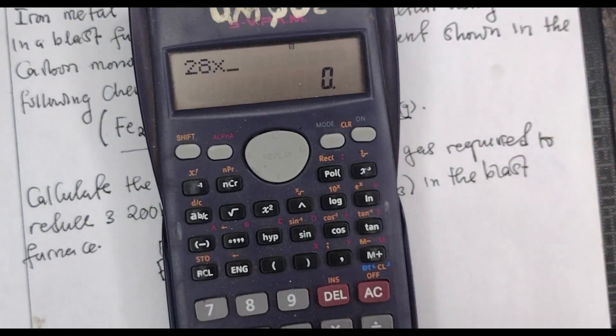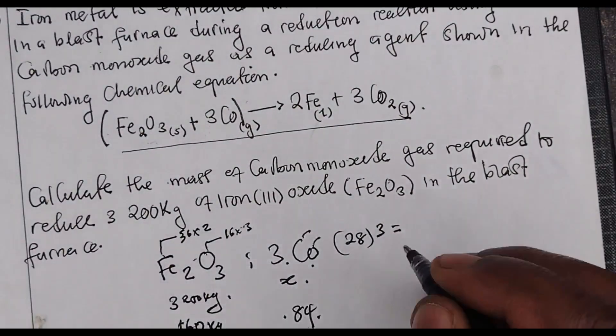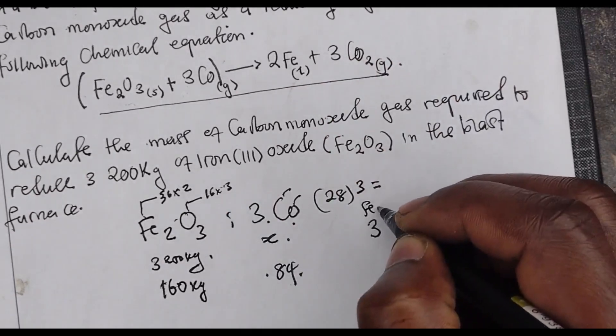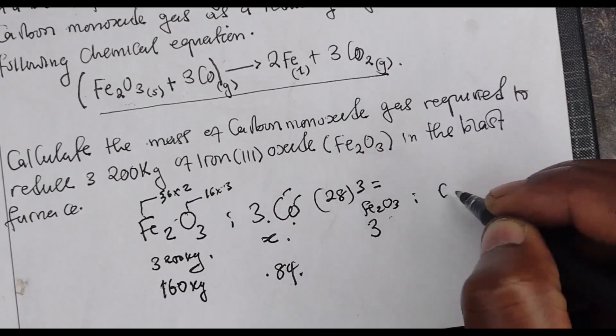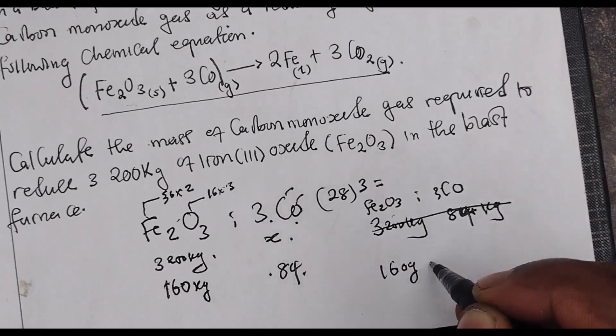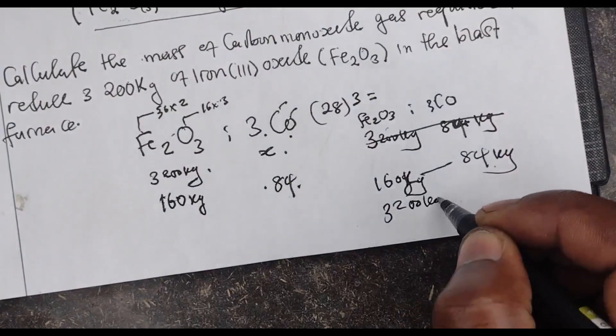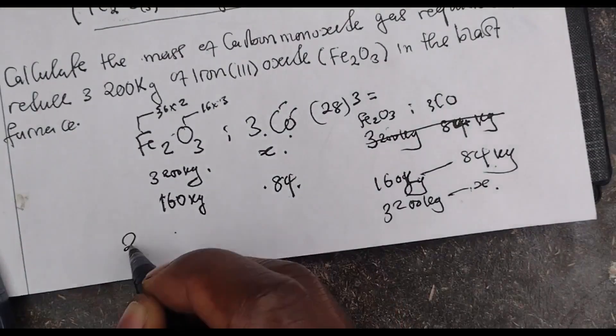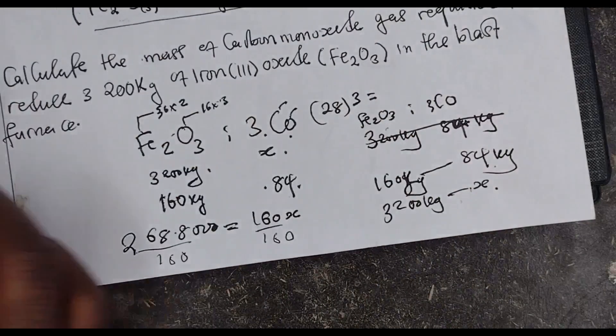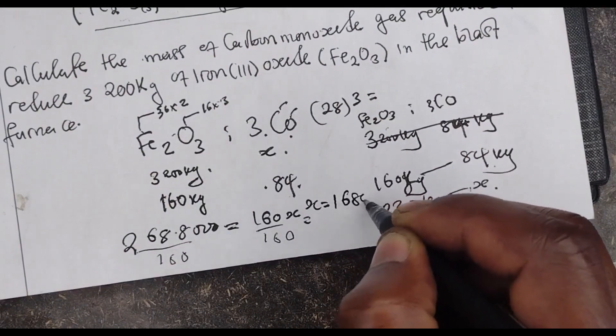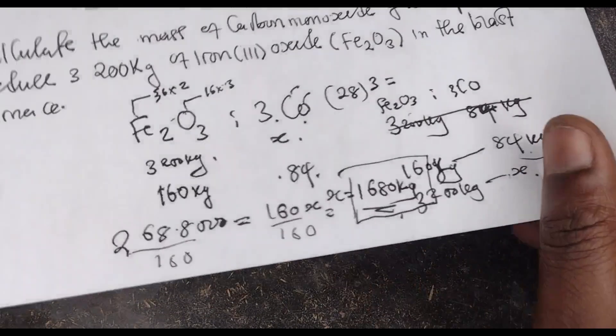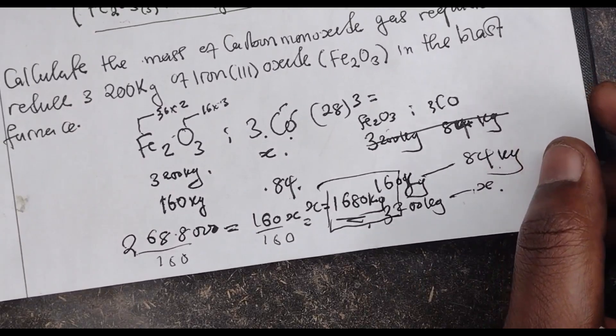So the ratio is going to be iron oxide to carbon monoxide: 3200 kg over 160 equals X over 84. You are going to have X as 1680 kg. So that is the mass that you needed. Alright, so that is it for this video.